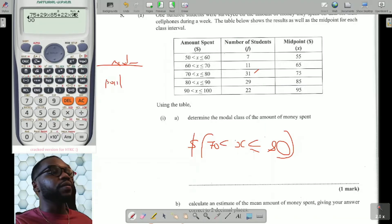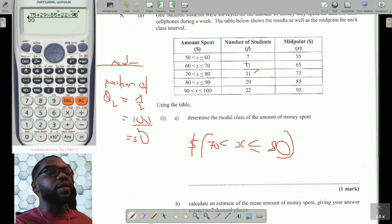The median class is the class in the middle. Now, there are 100 data values here. Since this is grouped data, the position of the median, we call that Q2, the second quartile, would be N, or the sum of F, which is the total frequency over 2. This would be 100 over 2, which is 50. So I need to find the 50th class. We'll start adding from the top.